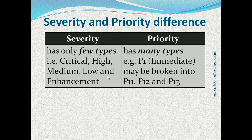The project team uses a few fixed types of severity: critical, high, medium, low, and enhancement. But there can be many types of priority as decided from time to time. For example, if there are many P1 or immediate priority open bugs, P1 priority can be broken down into P1.1, P1.2, and P1.3. P1.1 priority bugs are the highest priority bugs and would be addressed first.